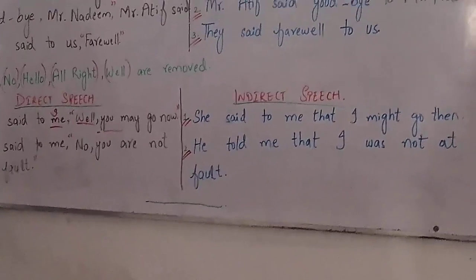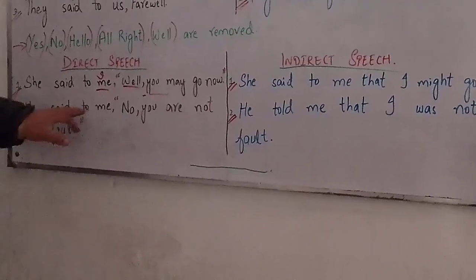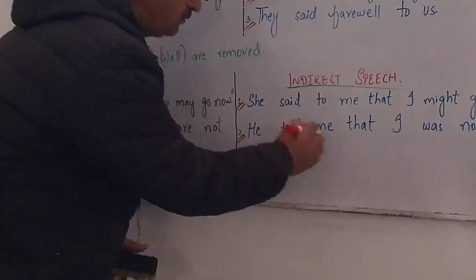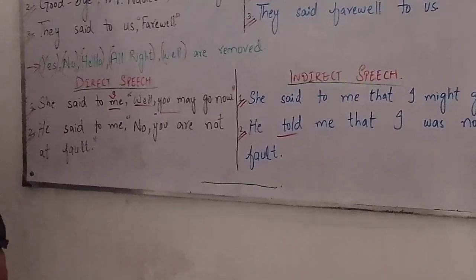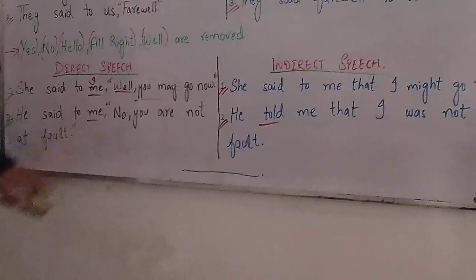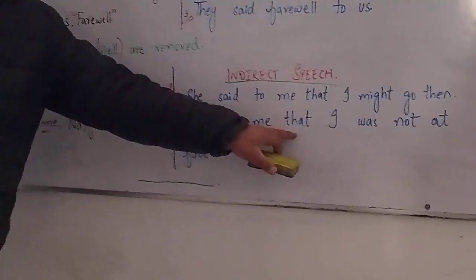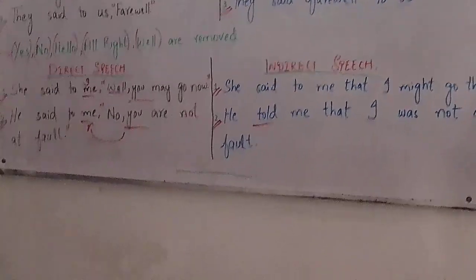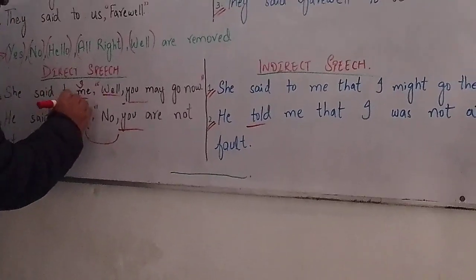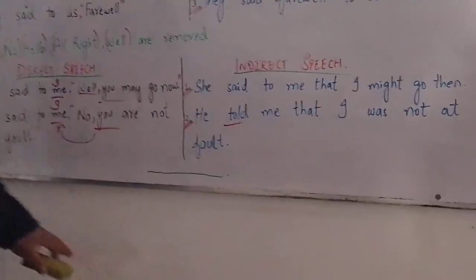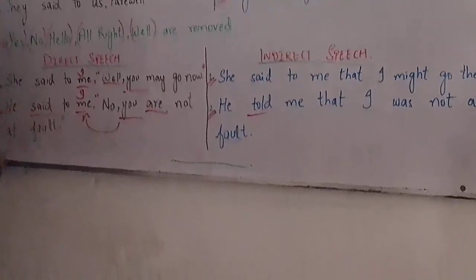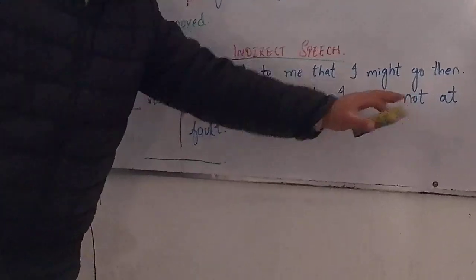Next example: 'He said to me, no, you are not at fault.' The word 'no' is removed. Because there is an object 'me' present, we use 'told' — he told me. The pronoun 'you' changes to 'I'. The verb 'are' changes to 'was' because of the past tense reporting verb 'said'. So the final sentence is: he told me that I was not at fault.